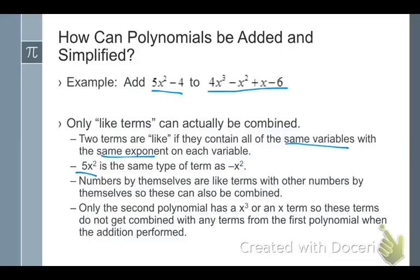So like terms have the same variables with the same exponent. 5x squared is the same type of term or is a like term with negative x squared. I have five of them, and I have a negative 1 of them. Negative x squared is the same as negative 1 times x squared. So you just add the coefficients together. 5 and negative 1 would give you 4x squared if you were adding those.